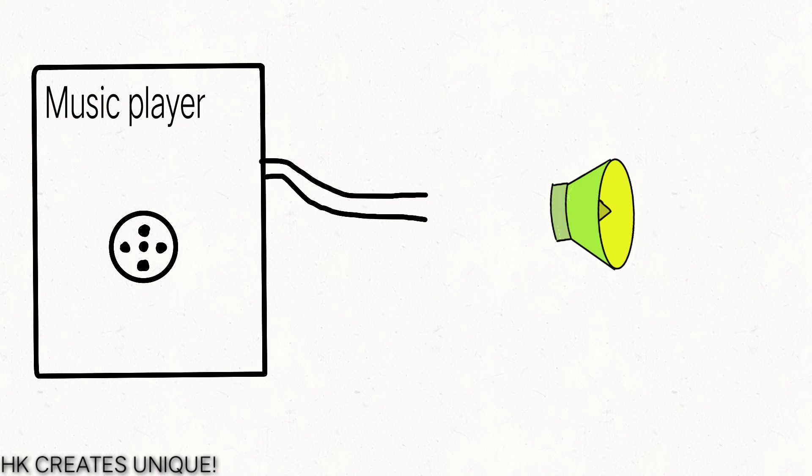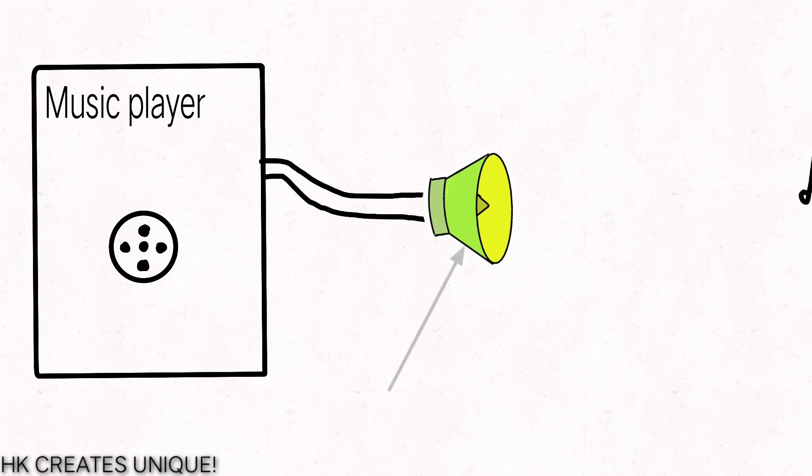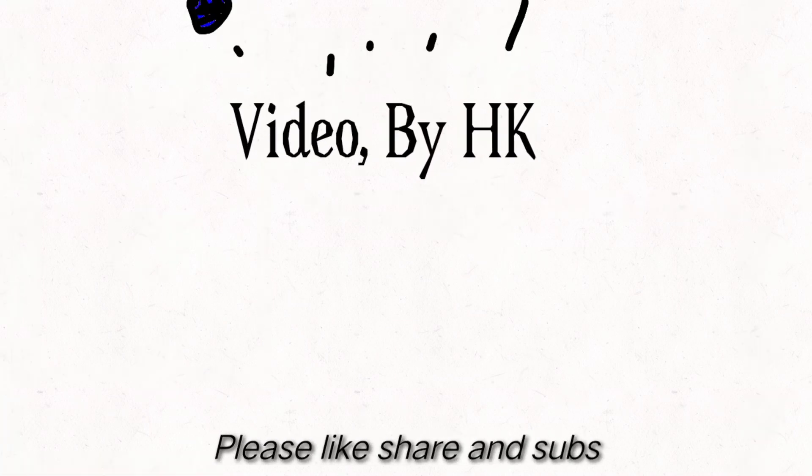As an example, a music player has a circuit that produces electric signal, and when these signals are connected to a speaker, the speaker converts it into sound waves.